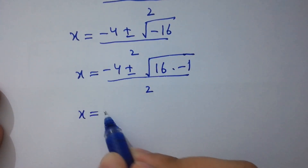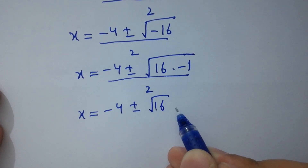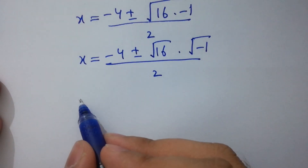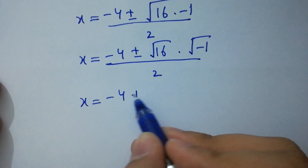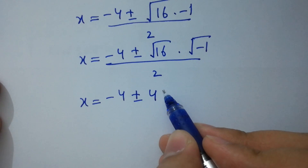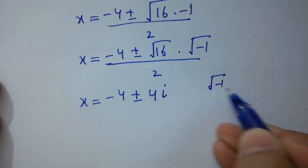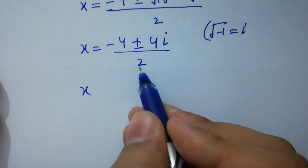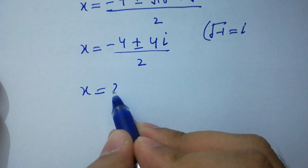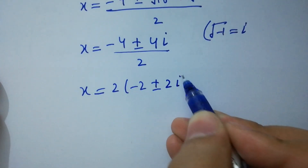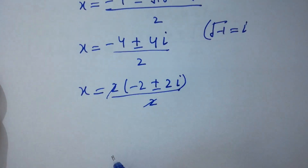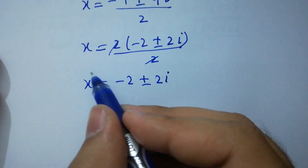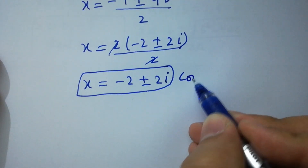x equals (−4 ± √(16 × −1)) / 2, which equals (−4 ± √16 × √(−1)) / 2. Since √16 equals 4 and √(−1) equals i from complex numbers, we get (−4 ± 4i) / 2. Taking 2 common: 2(−2 ± 2i) / 2. The 2s cancel, so x equals −2 ± 2i, which is our complex solution.